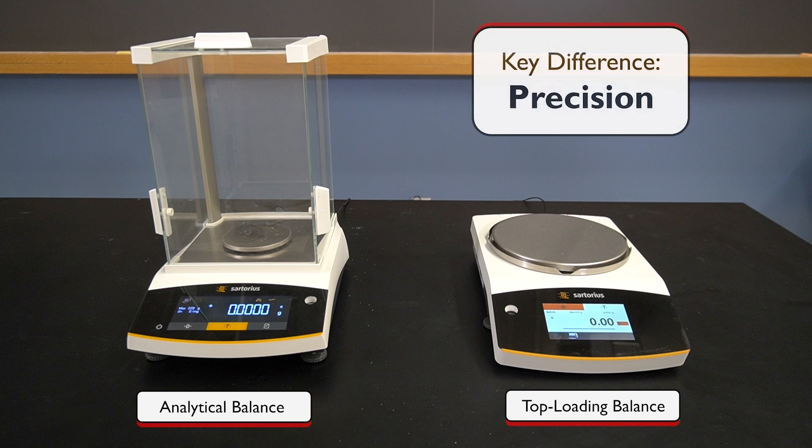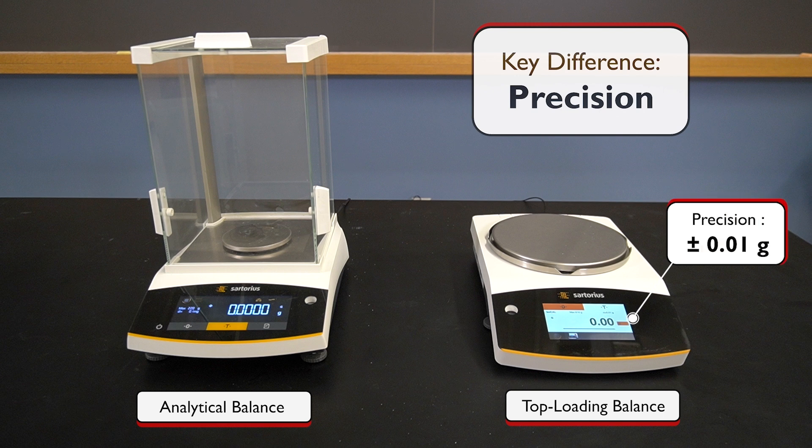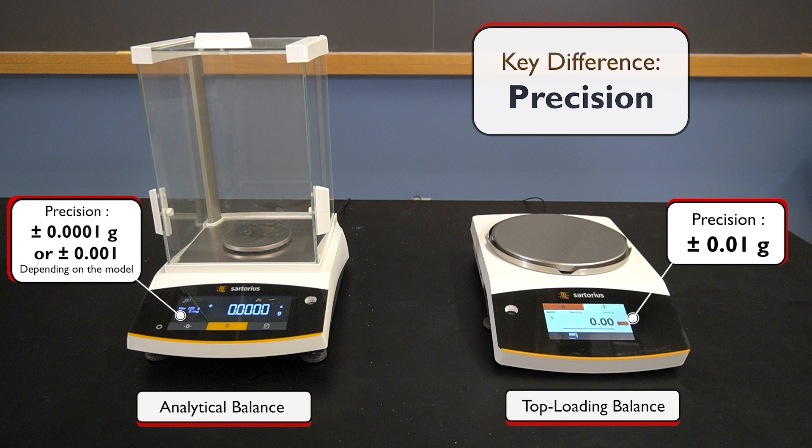Top-loading balances usually have a precision limit of plus or minus 10 milligrams, or 0.01 grams, whereas typical analytical balances allow for the mass measurement within plus or minus a tenth of a milligram.